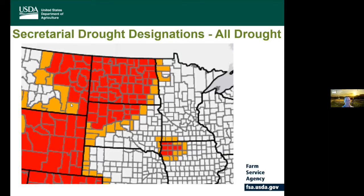Currently in North Dakota, counties shown in red on the map are primary disaster counties and those in yellow are contiguous disaster counties. Both primary and contiguous counties are eligible for emergency loans. With that, I'll turn it over to Ryan.